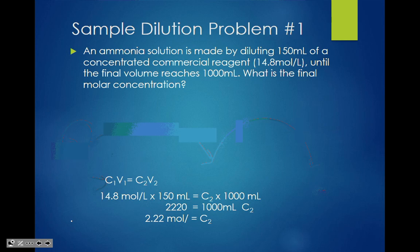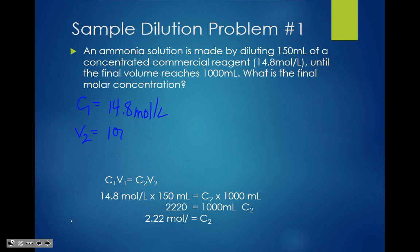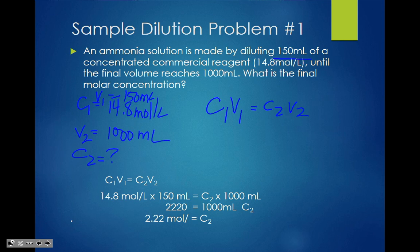Sample dilution question one: an ammonia solution is made by diluting 150 milliliters of a concentrated commercial reagent. C1 = 14.8 moles per liter, V1 = 150 milliliters, V2 = 1000 milliliters. What is the final molar concentration, C2? Using C1V1 = C2V2, the answer is 2.22 moles per liter.